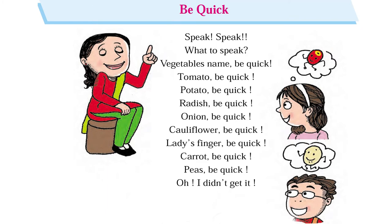So today the poem name is 'Be Quick' from your English Balbharti textbook, page number 22. Just listen how teacher reads that poem. Be quick! Speak, speak — what? Speak the vegetable names! Tomato, be quick! Potato, be quick! Radish, be quick! Onion, be quick! Cauliflower, be quick! Lady's finger, be quick! Carrot, be quick! Peas, be quick!